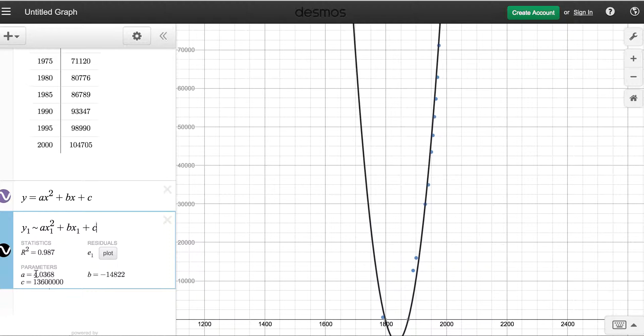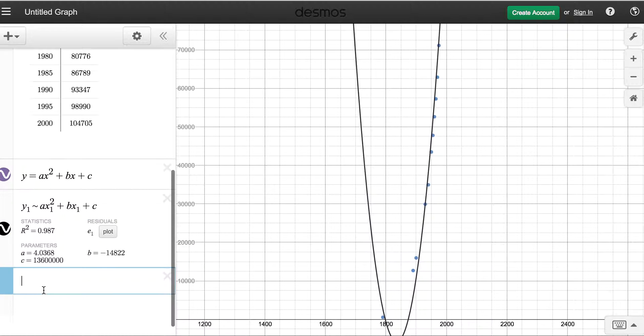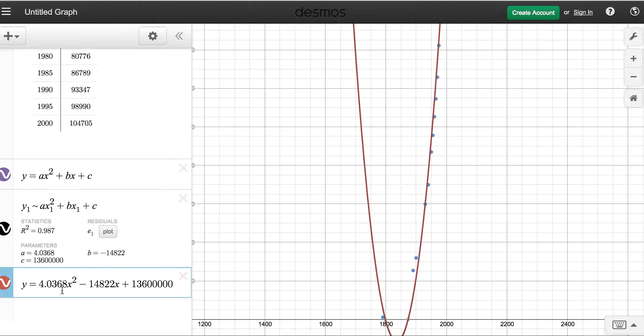You can see that it gave us our three parameters that we needed. So if you wanted to look at this as a full function, we would have y equals our a value times x squared plus our b value times x plus our c value, that y intercept way, way up there. And there you go. You can see they match up on top of each other, and we can use that equation to find out more information about this situation.